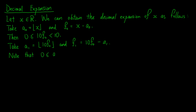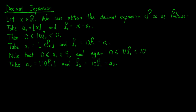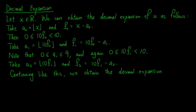Observe that a1 is an integer between 0 to 9 inclusive, and again 10 times f1 is greater than or equal to 0 and less than 10. We continue to take a2 to be the integer part of 10 times f1 and f2 to be the fractional part of 10 times f1. Continuing like this, we obtain the decimal expansion of x as a0.a1, a2, a3, and so on.